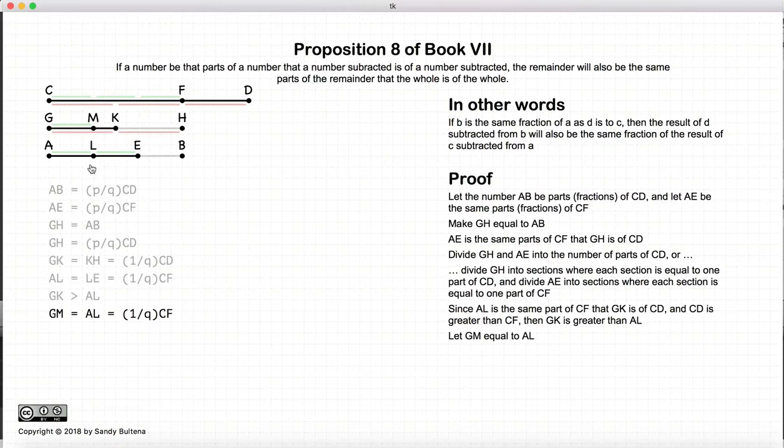In which case, we can then take a segment of GM, which is less than GK, where GM is equal to AL. So GM is going to be equal to 1 fraction or 1 part of CF.